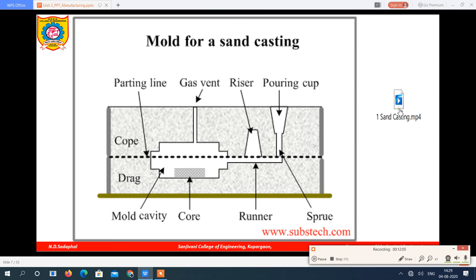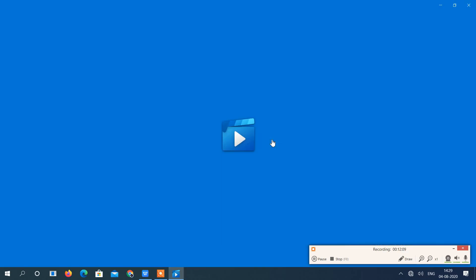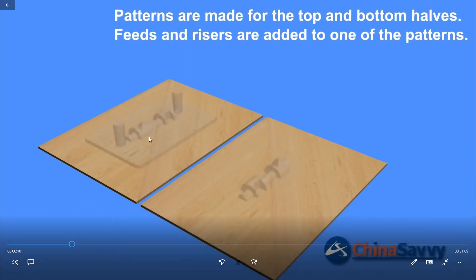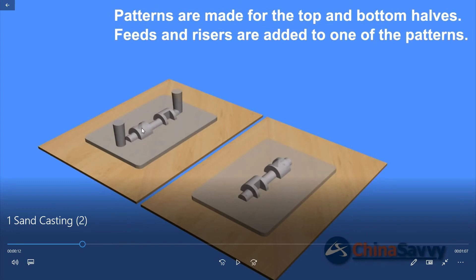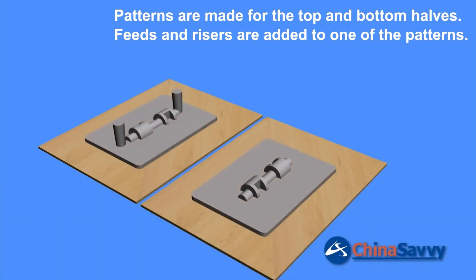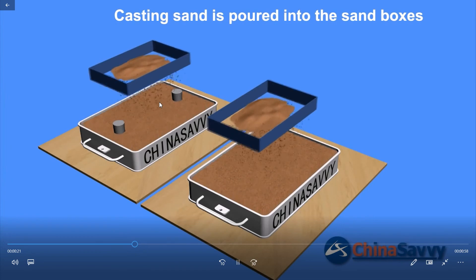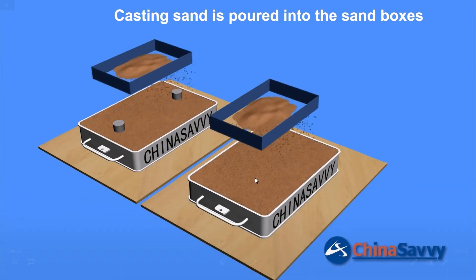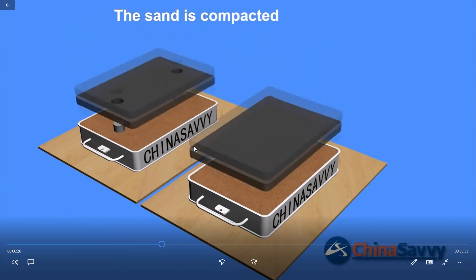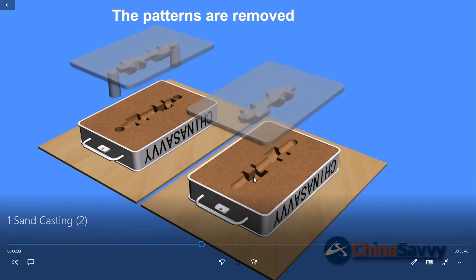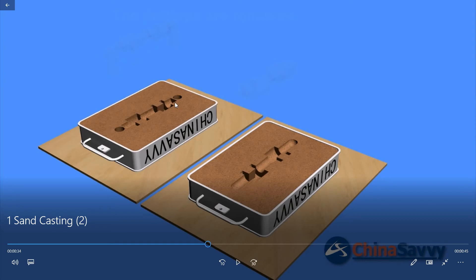Now we will see a small video. Two boxes are shown — the lower box is the drag, the upper is the cope. Initially, a pattern is made: two half-patterns, one half in the drag and one half in the cope. This video can easily be found on YouTube. Sand is inserted in both boxes to get a cavity, then pressure is applied on the sand so that it gets compacted.